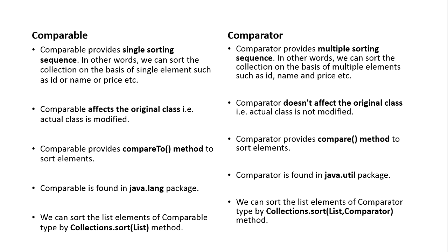Comparable comes under the java.lang package and Comparator comes in the java.util package. When we would like to sort elements on the basis of a single element, in that case we will use Comparable. Suppose we have an Employee class with an employee ID and employee name, and we would like to sort the data on the basis of employee ID — in that case we implement the Employee class as Comparable and override the compareTo method to compare the objects.